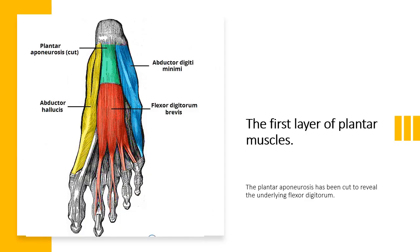Moving to the plantar aspect, we have 10 intrinsic muscles in the plantar aspect or sole of the foot. Collectively they stabilize and help form the arches of the foot. Individually they help the movement of the digits. All these muscles are innervated by the medial plantar nerve or the lateral plantar nerve, which are branches from the tibial nerve. The muscles of the plantar aspect are described in four layers, from superficial to deep.